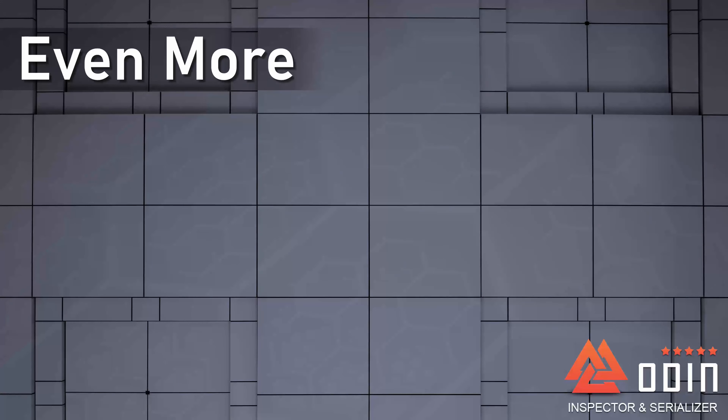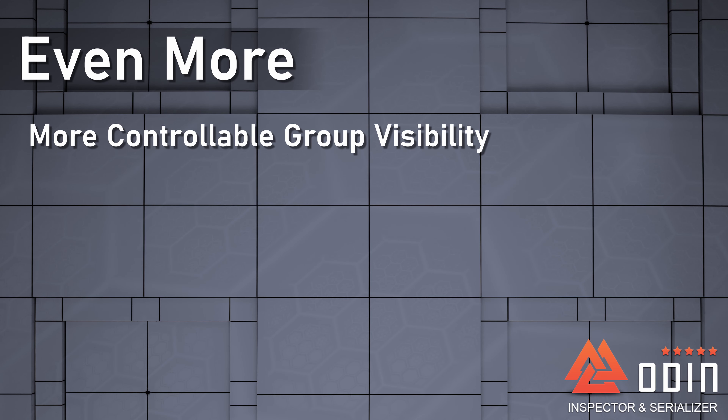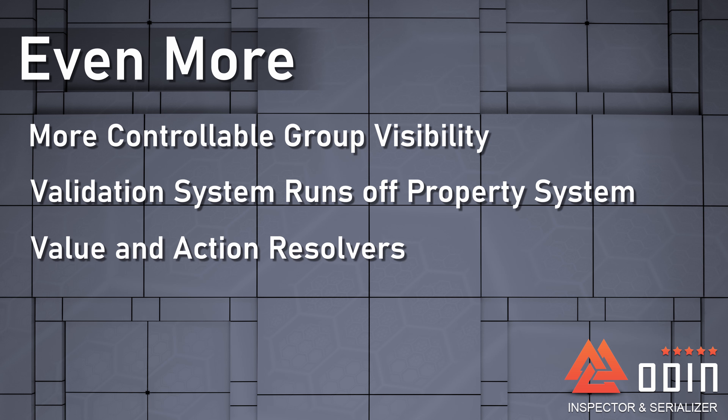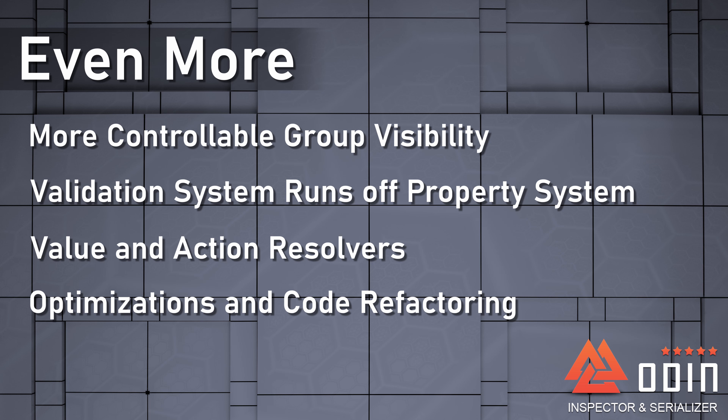Odin 3.0 still brings even more improvements, including more controllable group visibility. The validation system now runs off the property system, which makes it even more powerful and flexible. Value and action resolvers, which allow custom expression arguments, have been added. Huge optimizations and code refactorings in many different areas will also improve the overall performance of Odin, and many other small changes have been made.